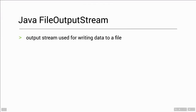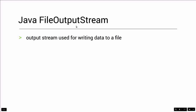Now we are going to discuss Java FileOutputStream. What is a Java FileOutputStream, what are the advantages of it, and how we can write a program using Java FileOutputStream. If you need to write some content to a file in your program, you need to use the FileOutputStream class. There are many other classes, but this is one of the important classes by which we can write content to a file. It is an output stream used for writing data to a file.